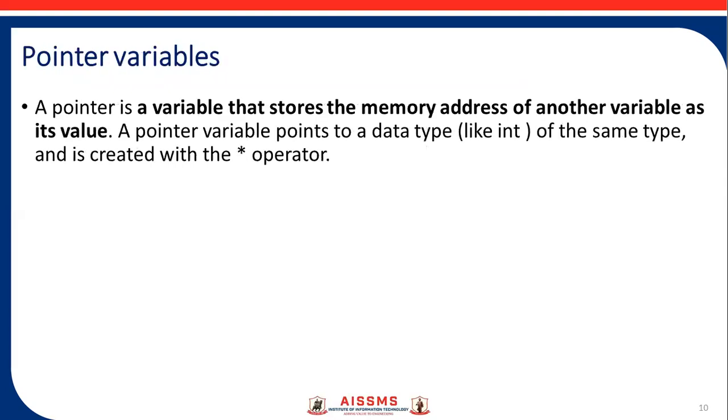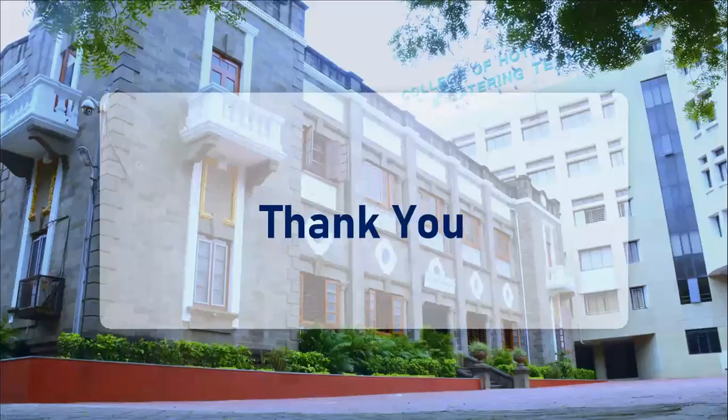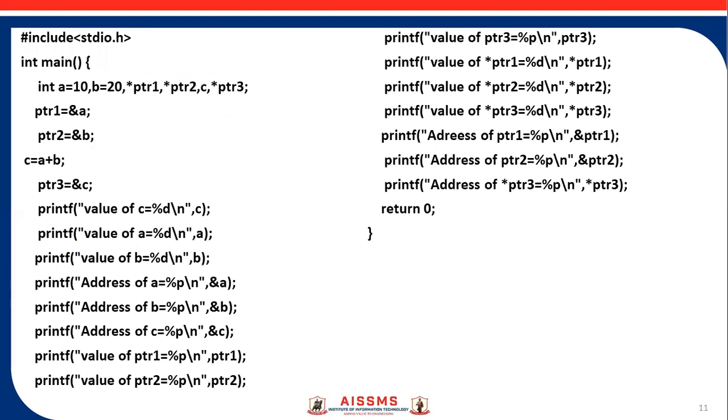A pointer variable is a variable that stores the memory address of another variable as its value. A pointer variable points to a data type like int of the same type and is created with the * operator. This is an example of that pointer.